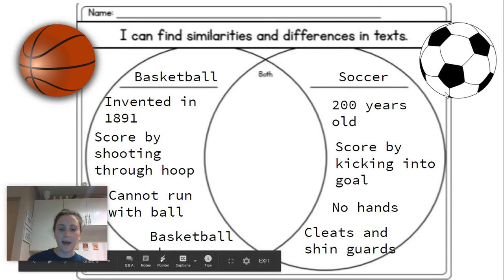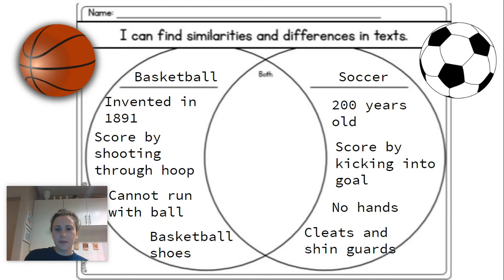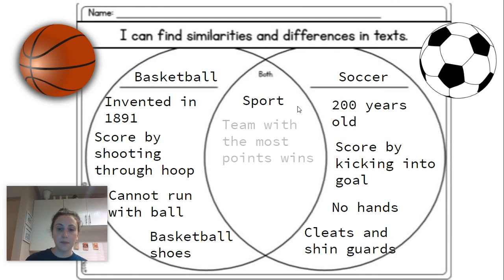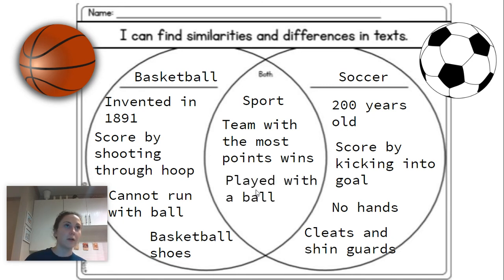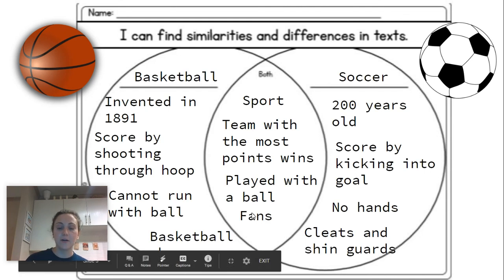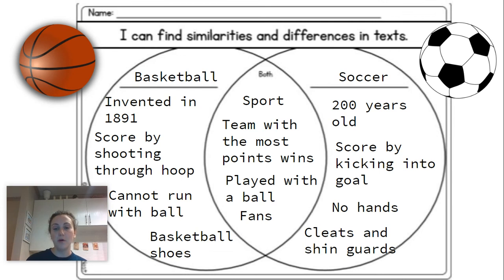Now let's think about the similarities between basketball and soccer — the things they have in common. Basketball and soccer are both sports, and they're both really popular sports in the United States. In both sports, the team with the most points wins. Also, both sports are played with a ball — if we think about another sport like hockey, hockey uses a puck, so played with a ball is a similarity. So now we have found the similarities and the differences between basketball and soccer by examining those nonfiction texts.